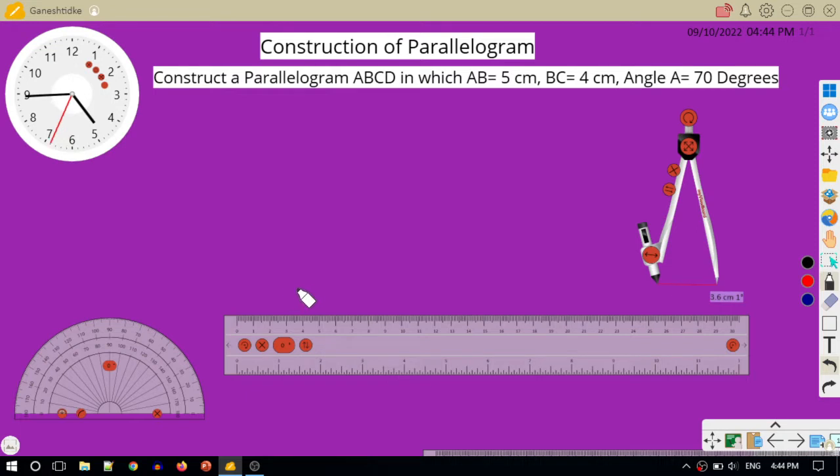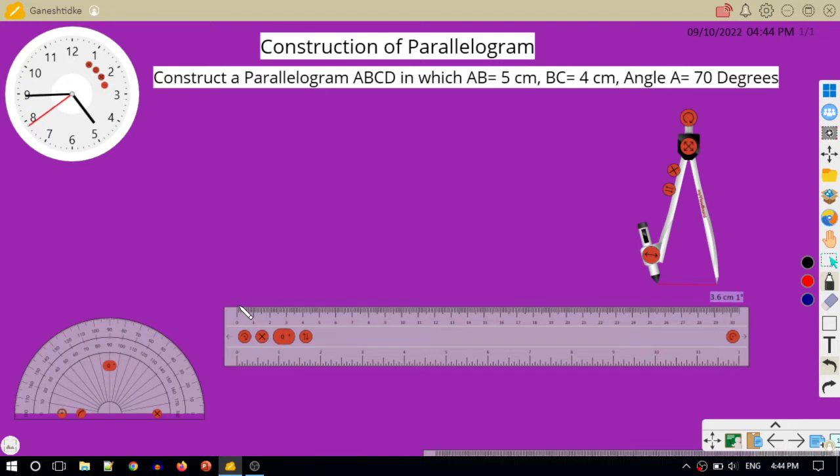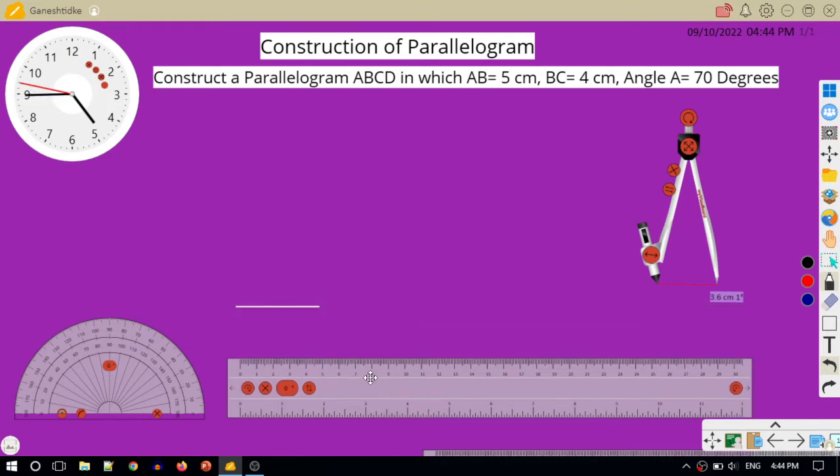So the first step is draw AB is equal to 5cm. With the help of the scale, I will draw AB equal to 5cm with 0 as the reference. And I will label it as AB equals 5cm.